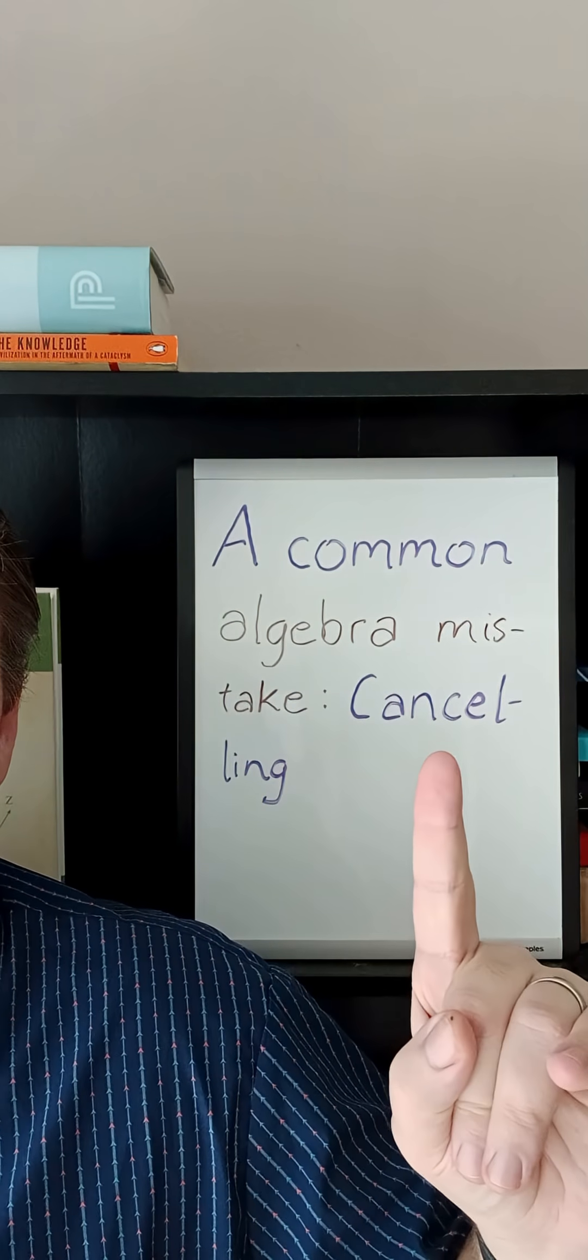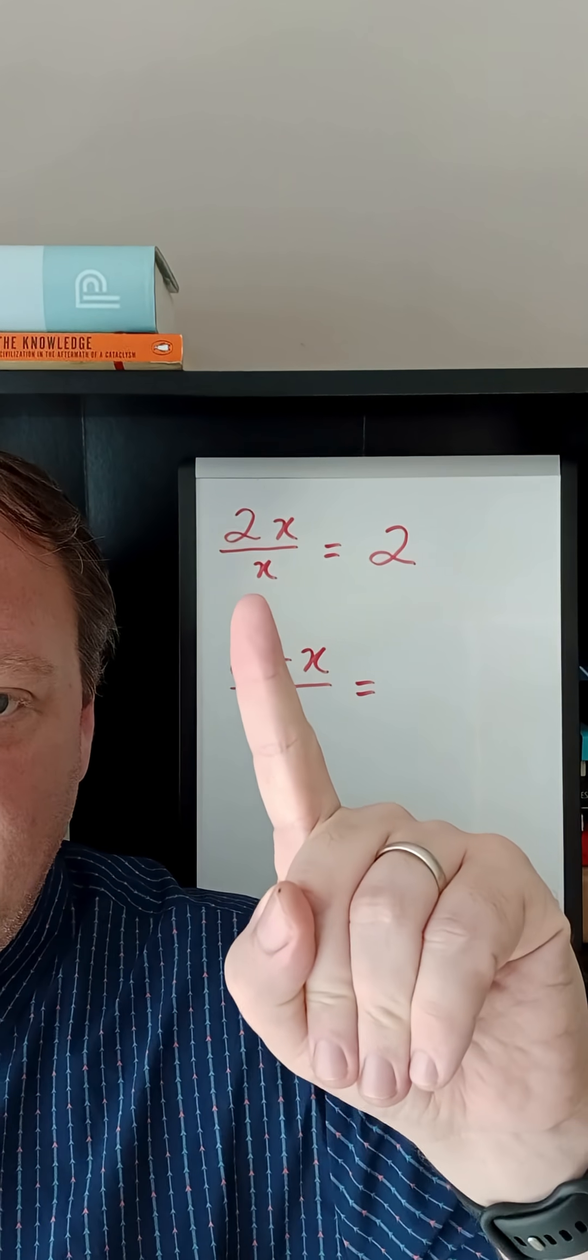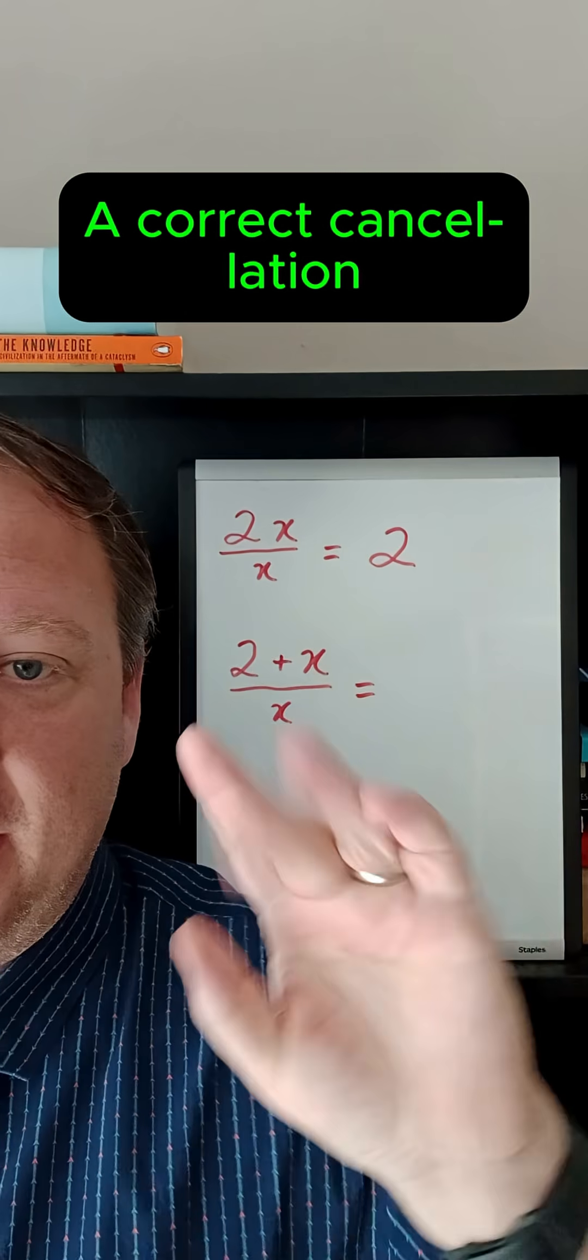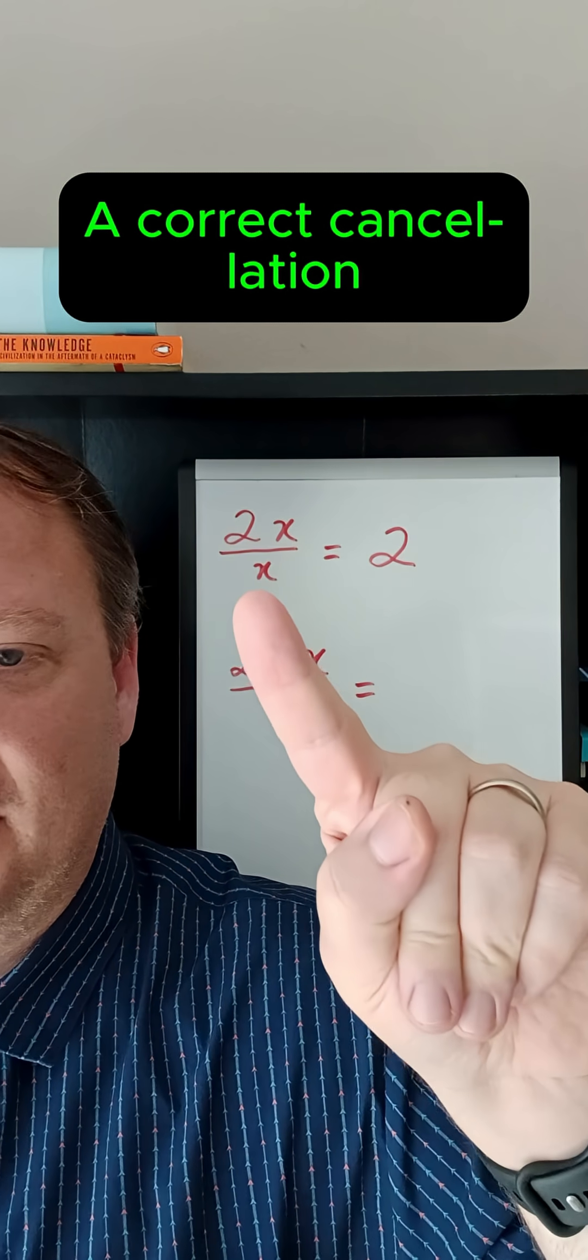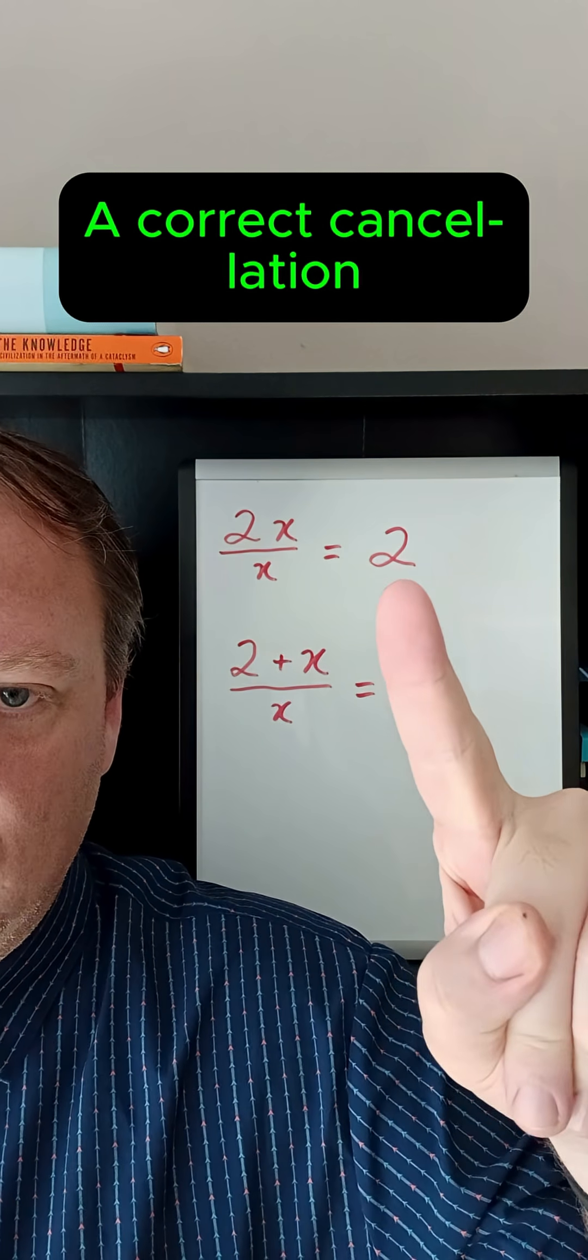Here is a common algebra mistake that has to do with canceling. Let's start with a correct cancellation, which is if you have, for instance, 2x over x. Let's assume that x is not zero because you can't divide by zero, but if you had an expression like this you would be able to cancel the x's leaving only 2.